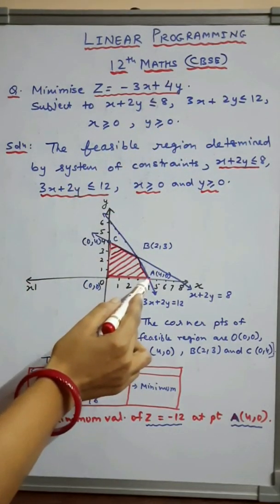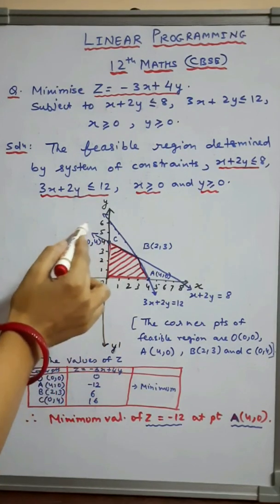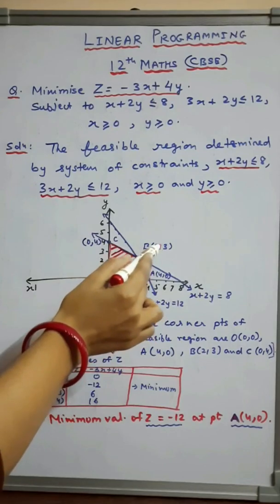So the first corner is (4, 0) and the second is (0, 4). If we draw a straight line, they intersect at point B(2, 3).